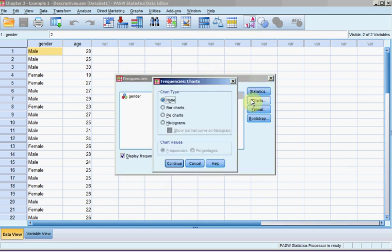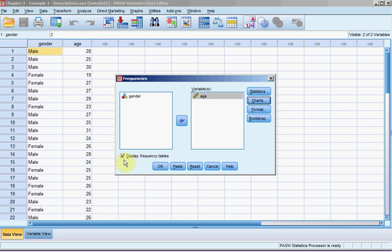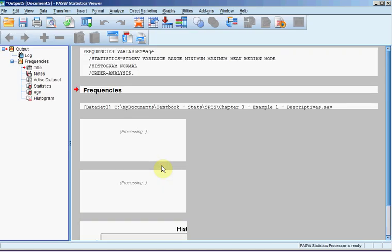For Charts, we'll select the Histogram. And we'll check this box to show normal curve on Histogram. Now hit Continue. We'll also leave this box checked, Display Frequency Table. We click OK, and it processes.